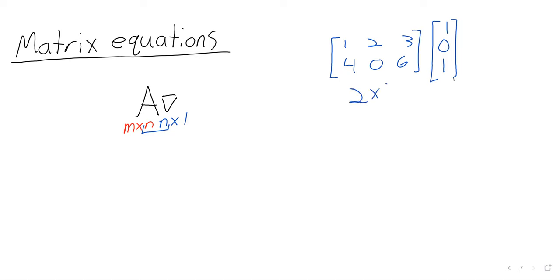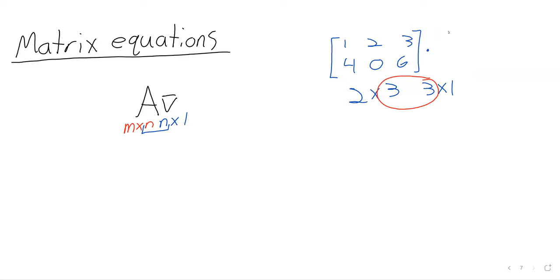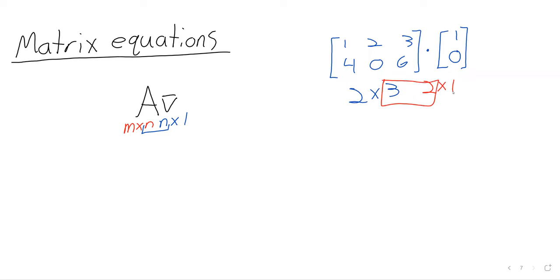Because this matrix is 2 by 3 and the vector is 3 by 1, those numbers match. On the other hand, if the vector were only 2 by 1, we'd have a mismatch — 2 by 3 and 2 by 1 — so that product is not defined.